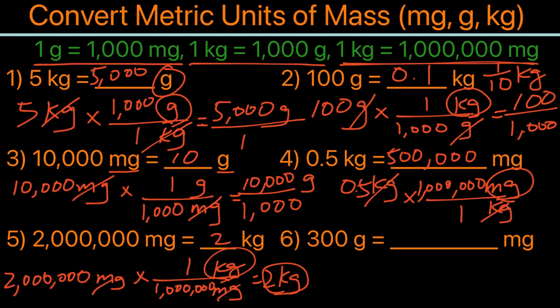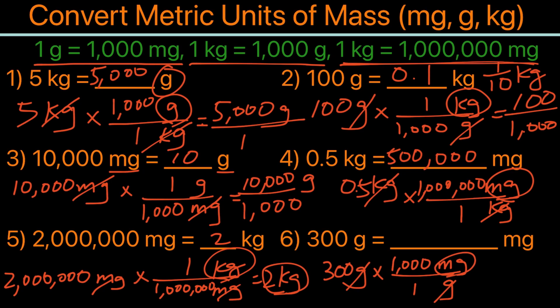For the last example, we have 300 grams converting to milligrams. Grams goes in the denominator and milligram in the numerator, using 1 gram equals 1,000 milligrams. Grams cancel out, and 300 times 1,000 gives us 300,000 milligrams.